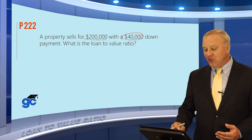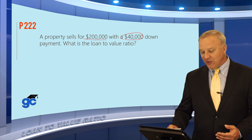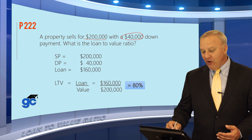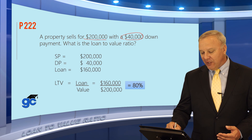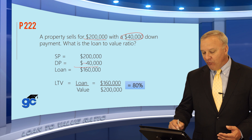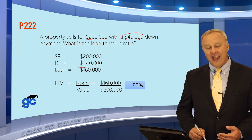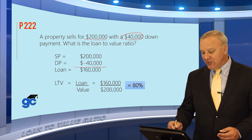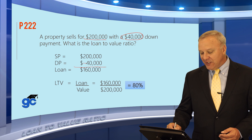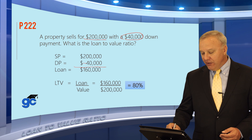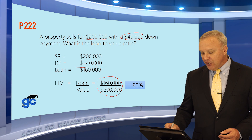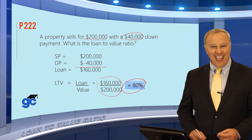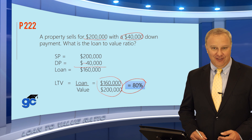Very simply, if the property sold for $200,000 and there was a $40,000 down payment, then the loan amount — you would subtract the down payment — and the loan amount would be $160,000. Just plug these into your calculator: $160,000 divided by $200,000, and the loan-to-value ratio is 80%, or 0.8.